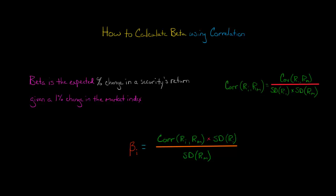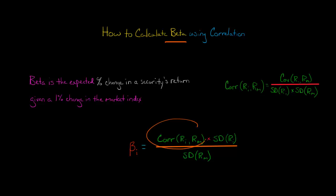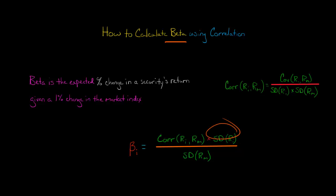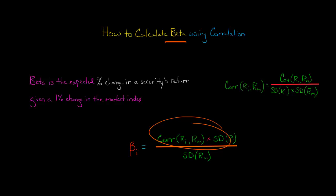In this video, I want to show you how to calculate the beta of a stock using the correlation of the stock's returns with the returns of the market. Here's the formula we're going to use: we take the correlation of the returns of stock I — say, Walmart stock returns — and the returns of the market. We multiply it by the standard deviation of the stock returns for firm I, which we also call the volatility. Then we divide all of that by the volatility of the market return.